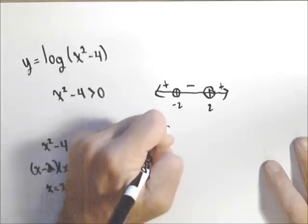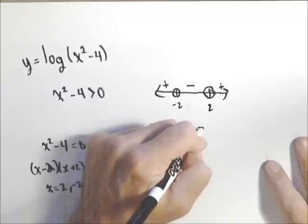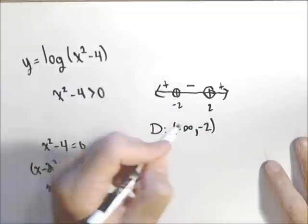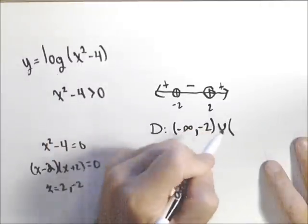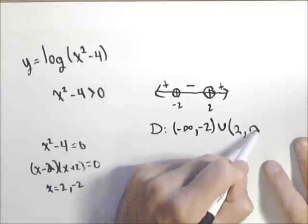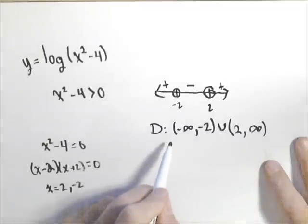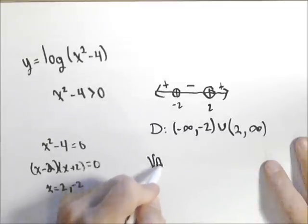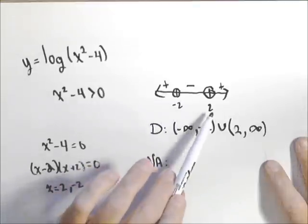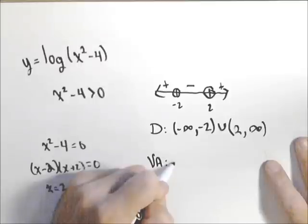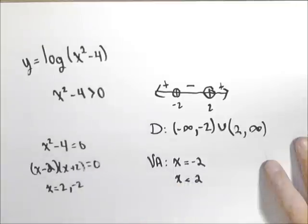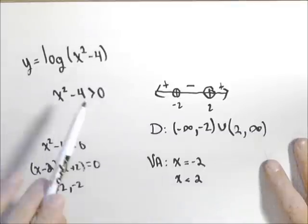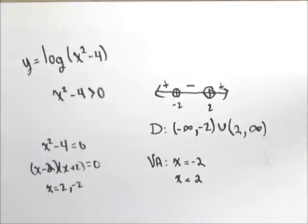My domain is negative infinity to negative two, not including negative two, union with two to infinity, not including two. So there is the domain of my logarithmic function. For vertical asymptotes, we actually have two — because there are two places where the argument of the log equals zero. They occur at x equals negative two and x equals positive two. It is very possible to have more than one vertical asymptote if you have more than one value that makes zero inside the argument of your log.